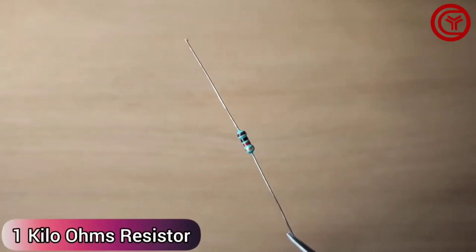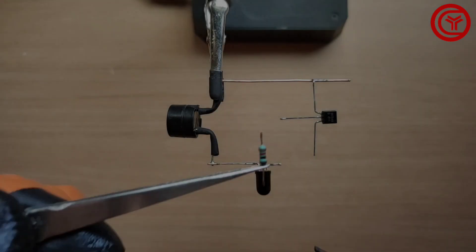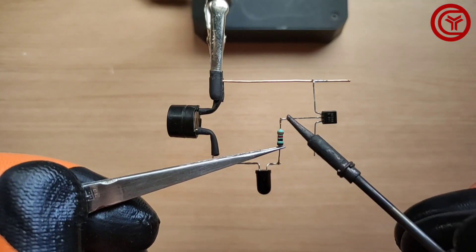Take a 1 kilo ohm resistor and solder it between the base of transistor and IR positive.